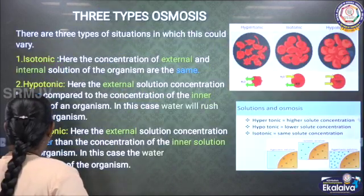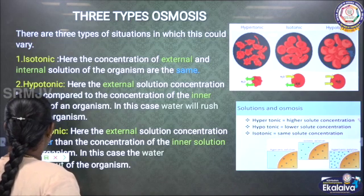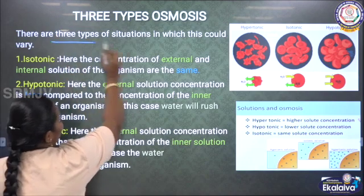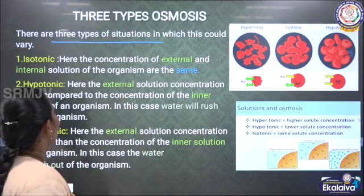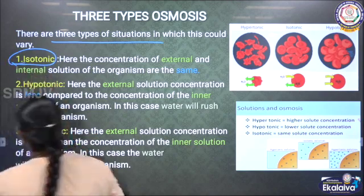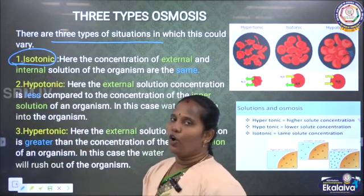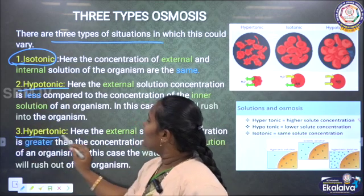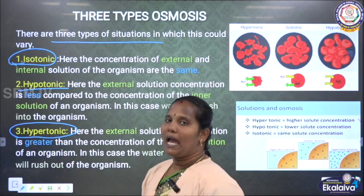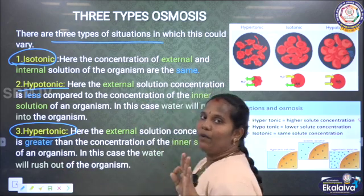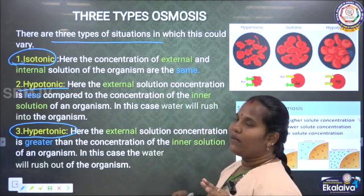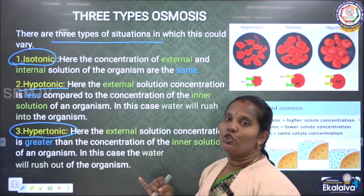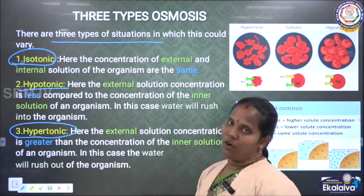We can see three types of the osmosis process. What are the three types? First is isotonic, second is hypotonic, and third is hypertonic. So there are three types of osmosis.